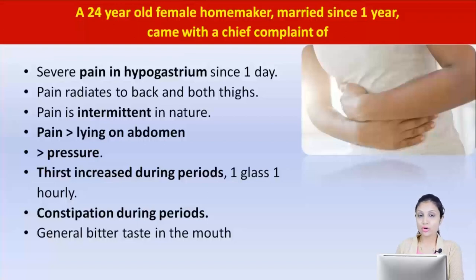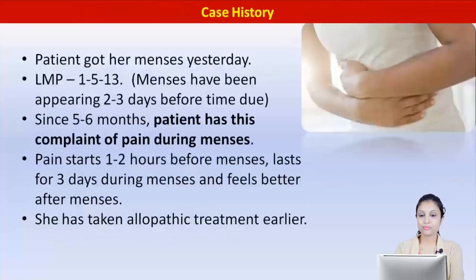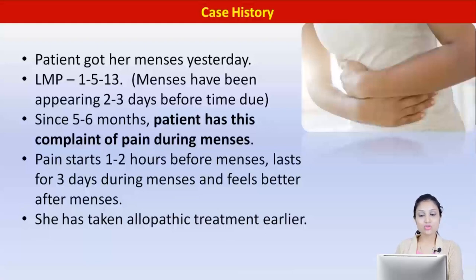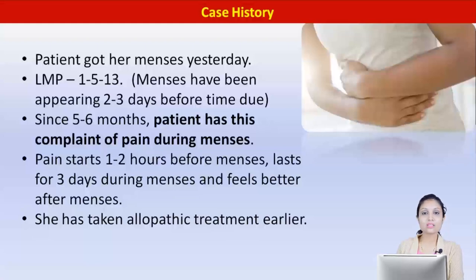During periods she experiences increased thirst as well as constipation. There is a general bitter taste in her mouth. The patient got her menses one day prior. Menses have been appearing two to three days before the due date, since five to six months. The patient has this complaint of pain during menses, so it is fairly recent.